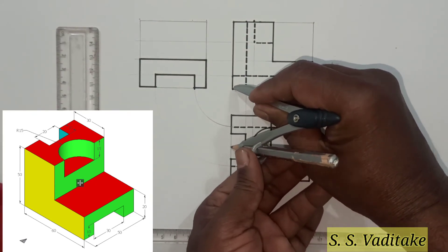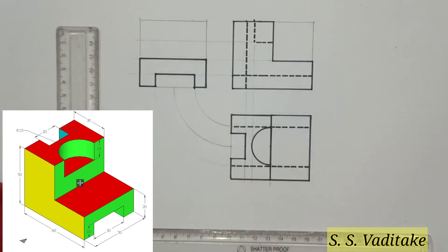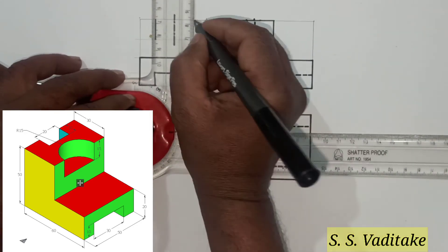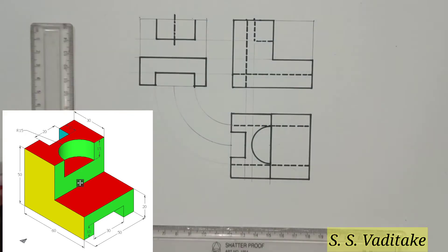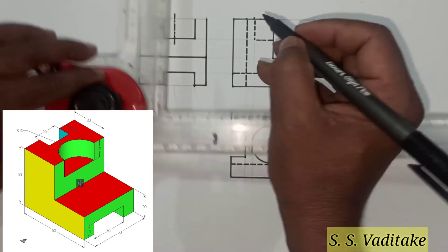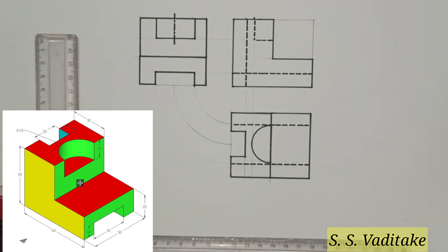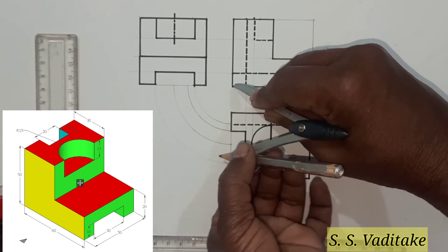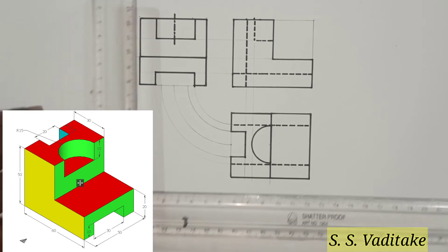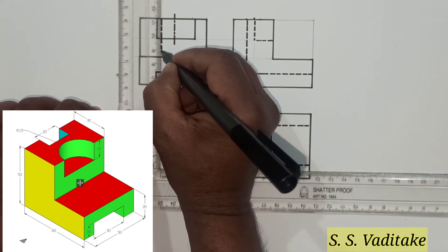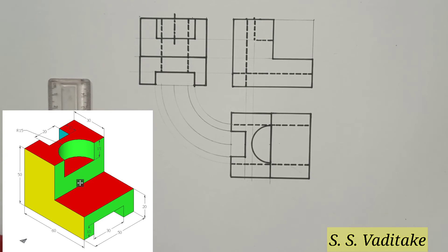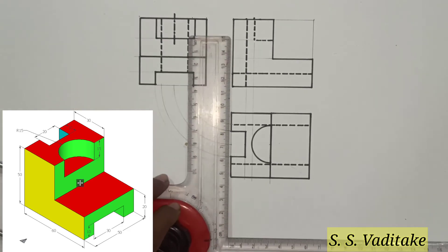To draw the side view of the semicircle, take the projection of the center line from the top view, show the center line in the side view, and complete the semi-circular portion which appears as a rectangle. All visible surfaces are now shown in the side view. For the hidden portion, take the projection of the slot from the top view, mark the projection points in the side view, and draw dotted vertical lines to indicate the hidden portion not visible in the right hand side view.